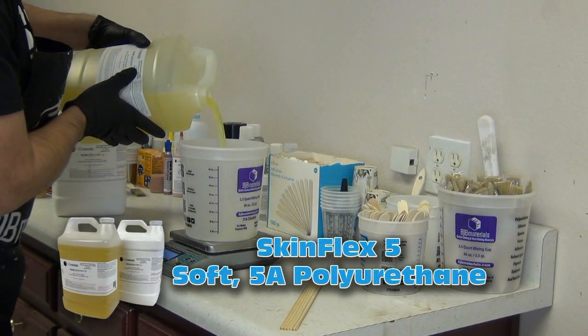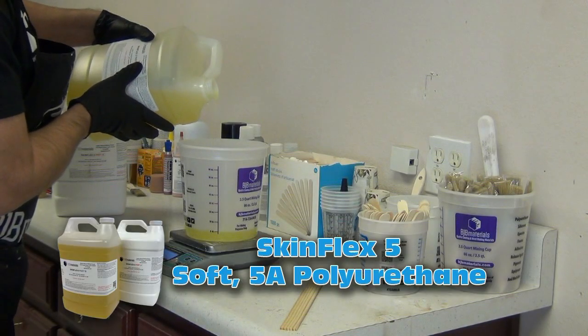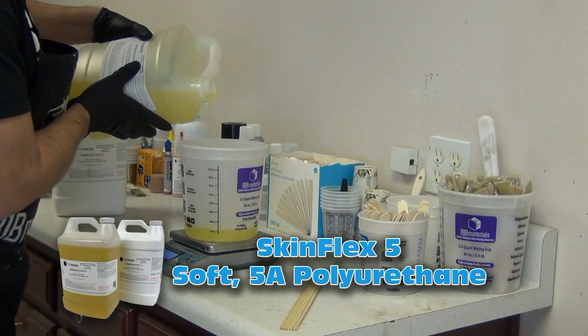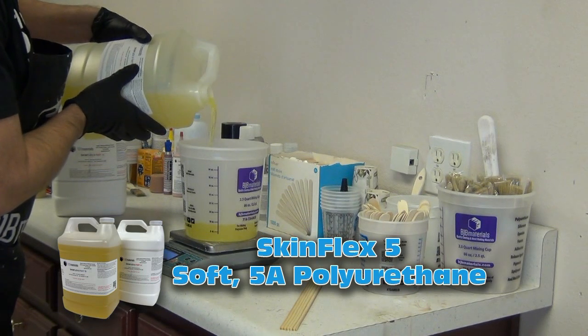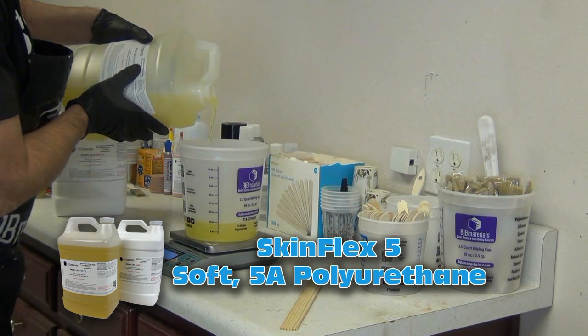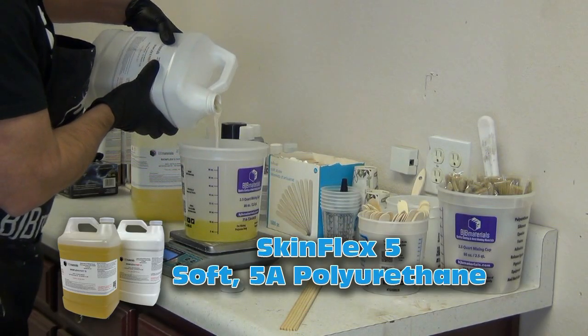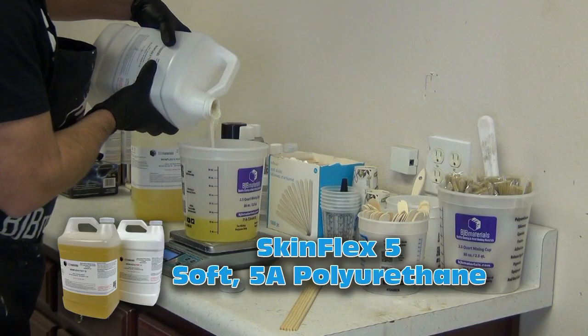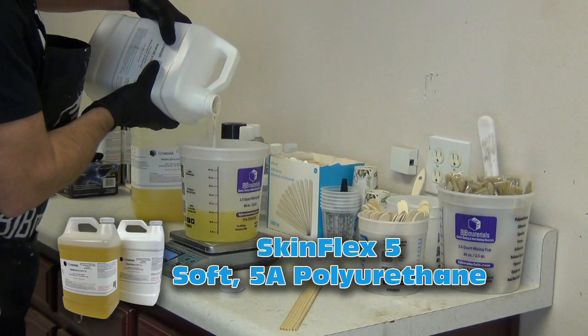Real important to know if you are working in a cold environment. You want to make sure that especially once you reconstitute that part A, that you keep that in a warm area. SkinFlex 5 mixes one-to-one by weight. Here, I'm not going to be adding any pigment. So this is pretty straightforward. I think this was about 450 grams of part B. And then I'm adding my part A.